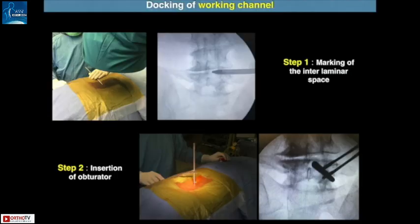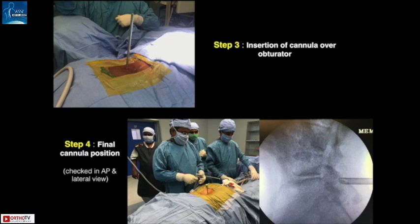The procedure is very simple and begins with the docking of the working channel. For this we have to mark the center of the interlaminar space in the AP view. An 8 mm incision is taken as close to the midline as possible. The dilator is then inserted through the incision till it reaches the surface of the ligamentum flavum. Check X-rays are taken in the AP and lateral views, and the working cannula with the opening facing medially is passed over the dilator. Position is confirmed in AP and lateral views, and the dilator is then removed.